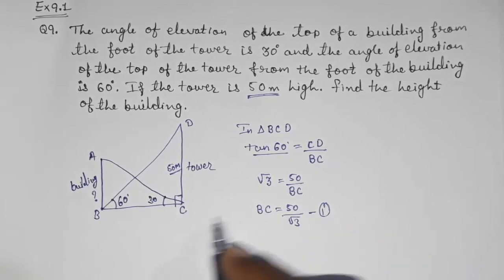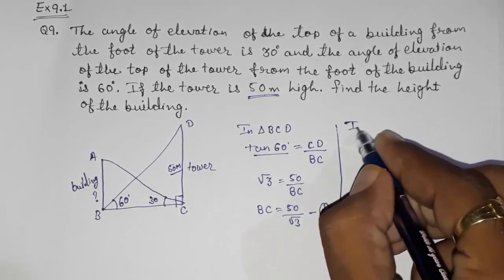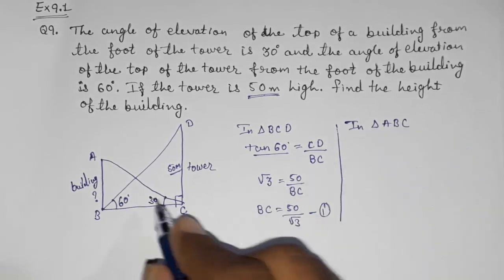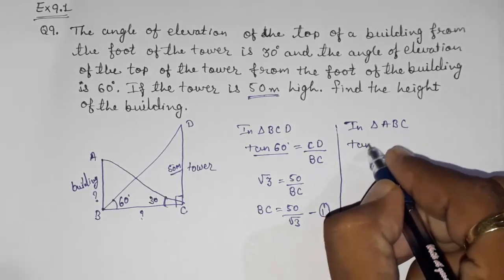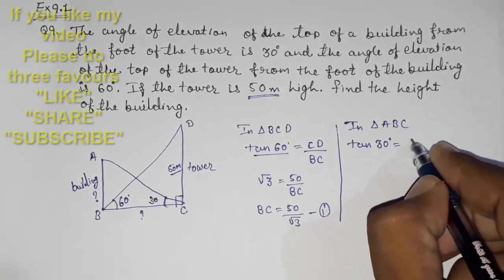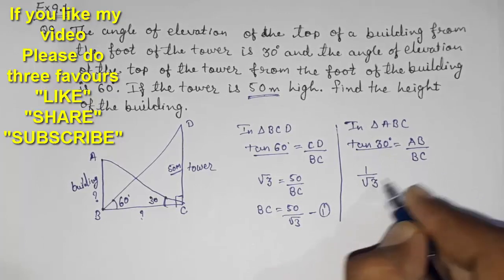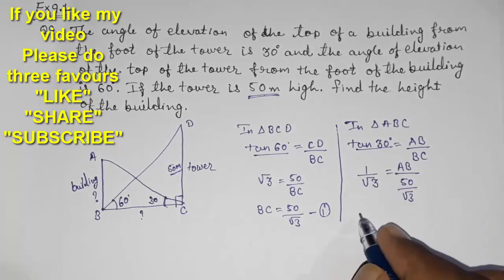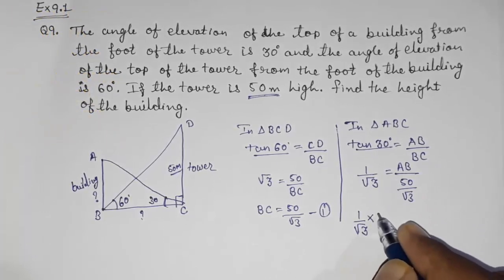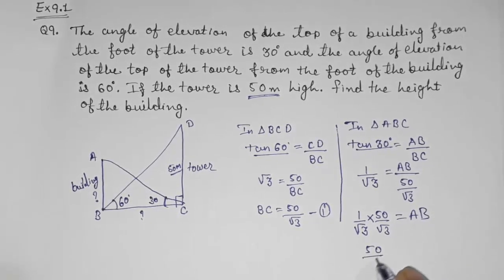Now using BC, we find AB in triangle ABC. We have 30 degrees; we want to find AB and we have BC. Using tan 30 degrees: opposite is AB and adjacent is BC. Tan 30 = 1 / root 3 = AB / BC. Substituting BC = 50 / root 3, we get AB = (1 / root 3) × (50 / root 3) = 50 / 3. So the height of the building is 50/3 meters.